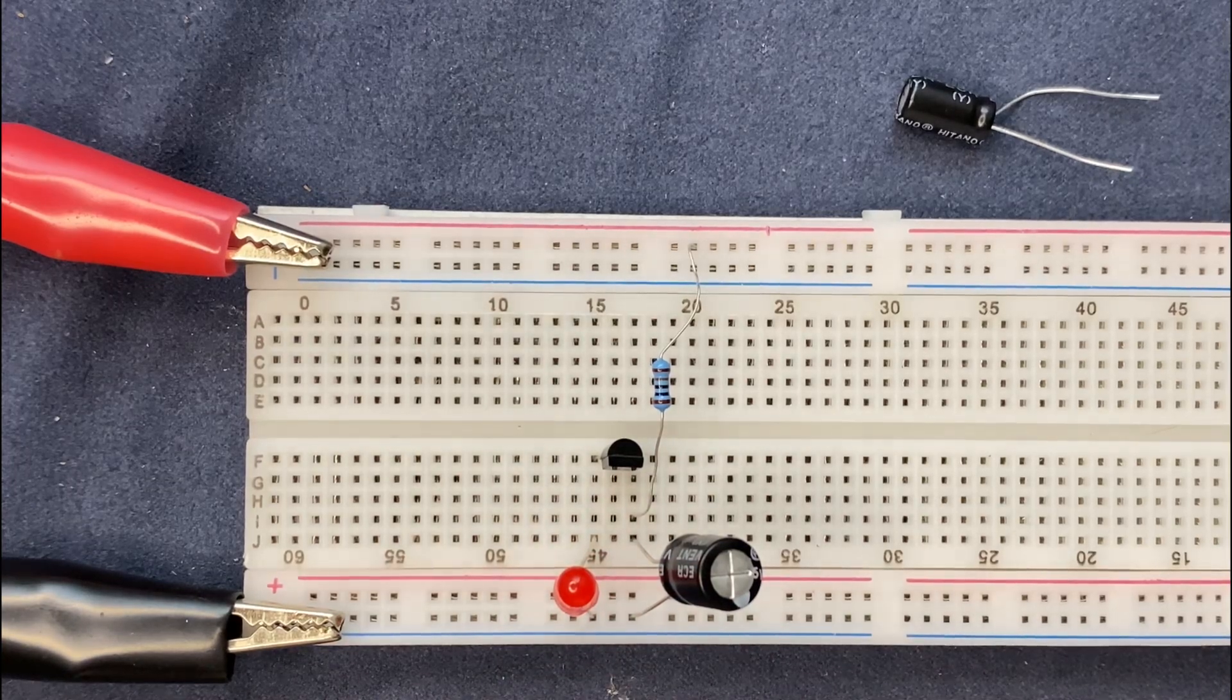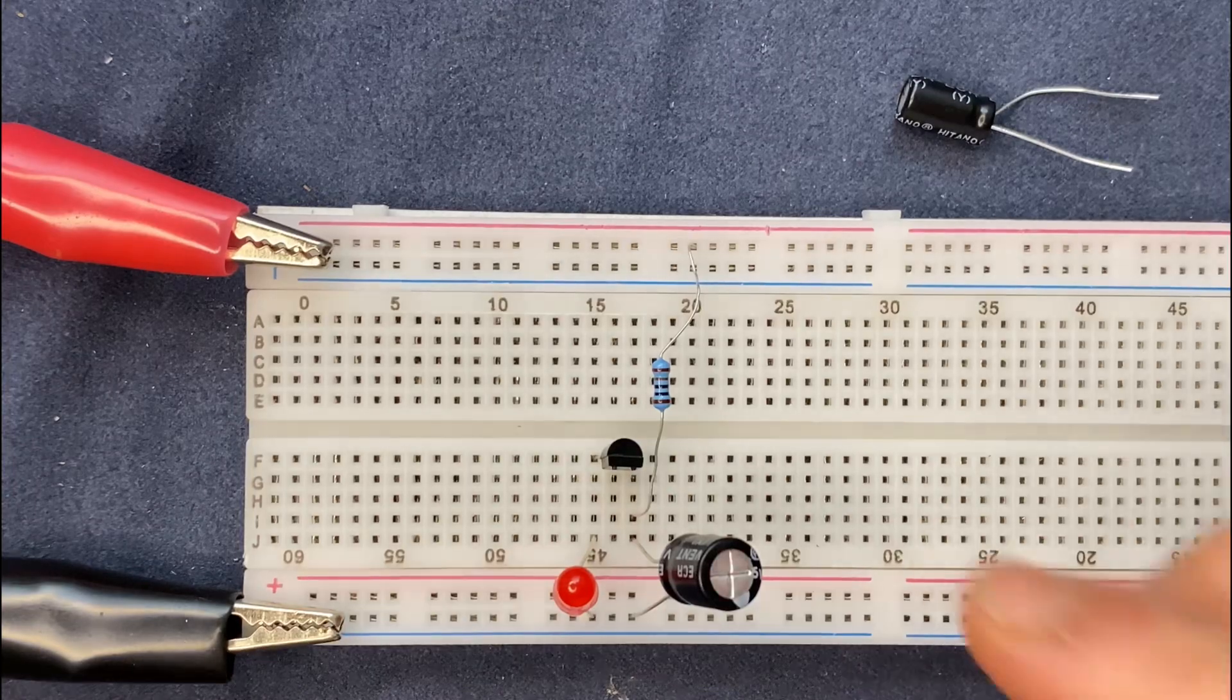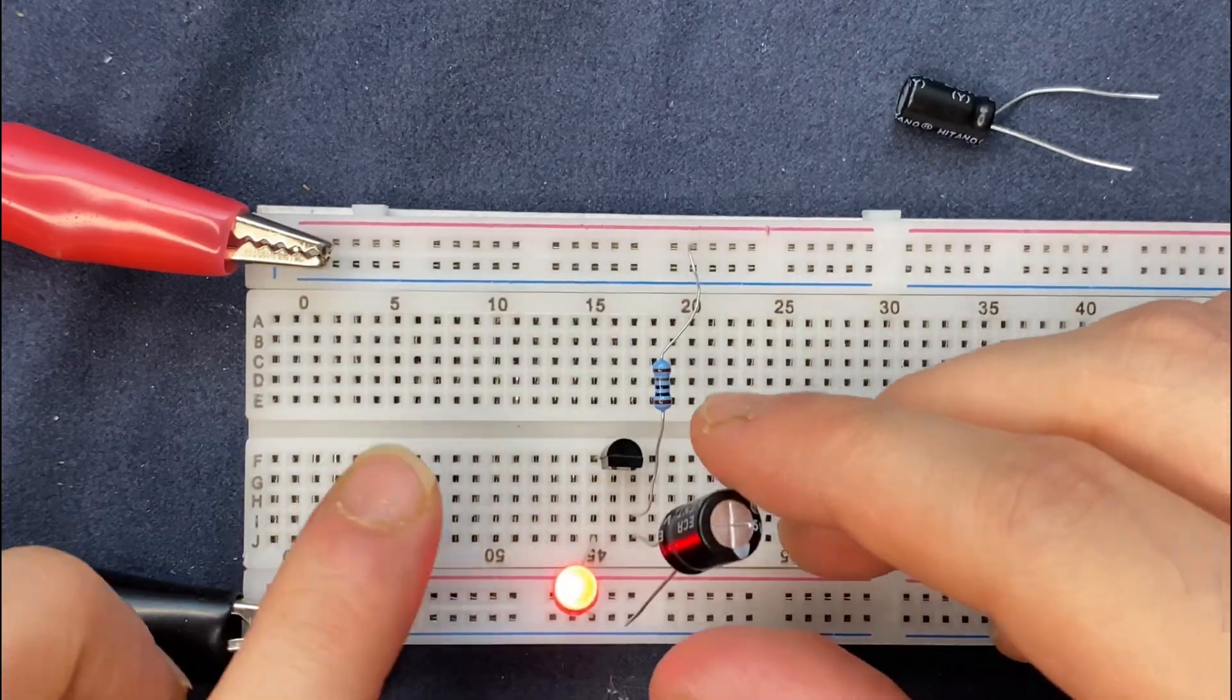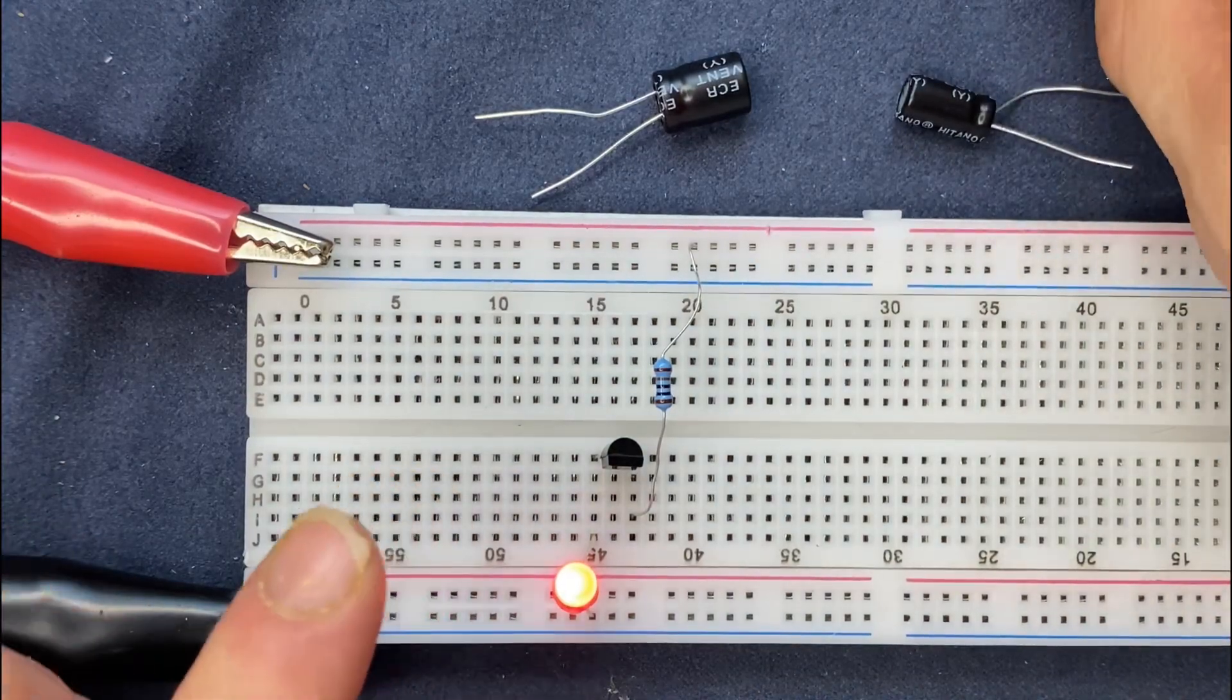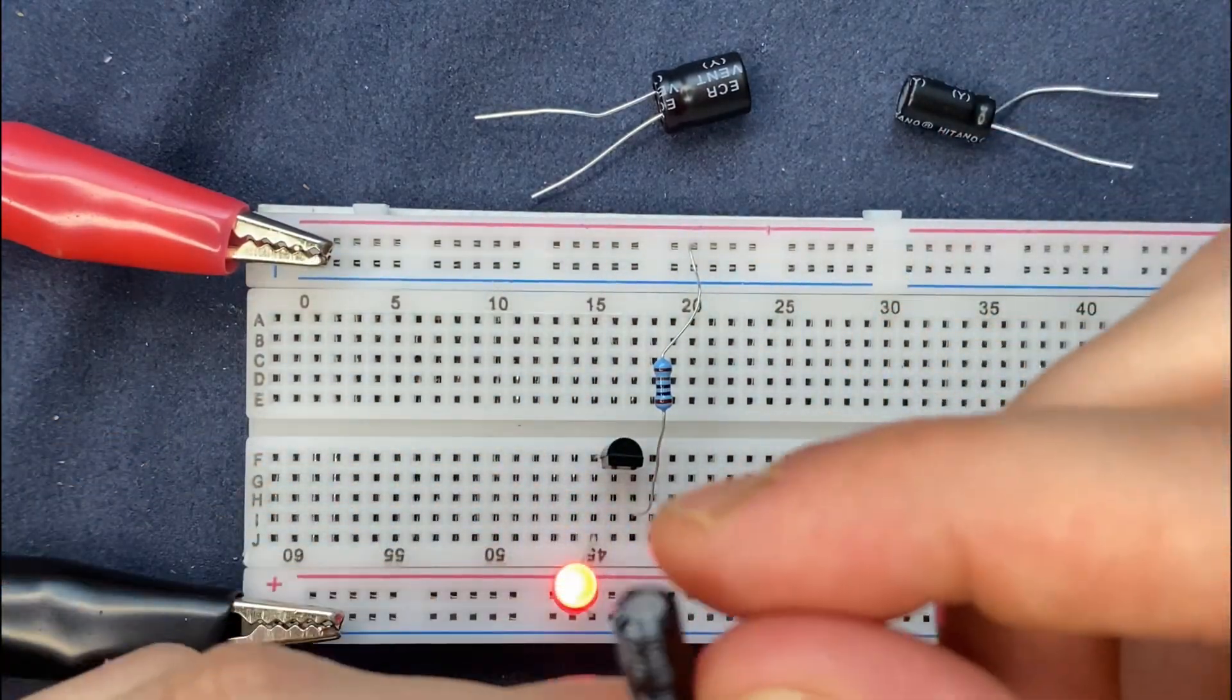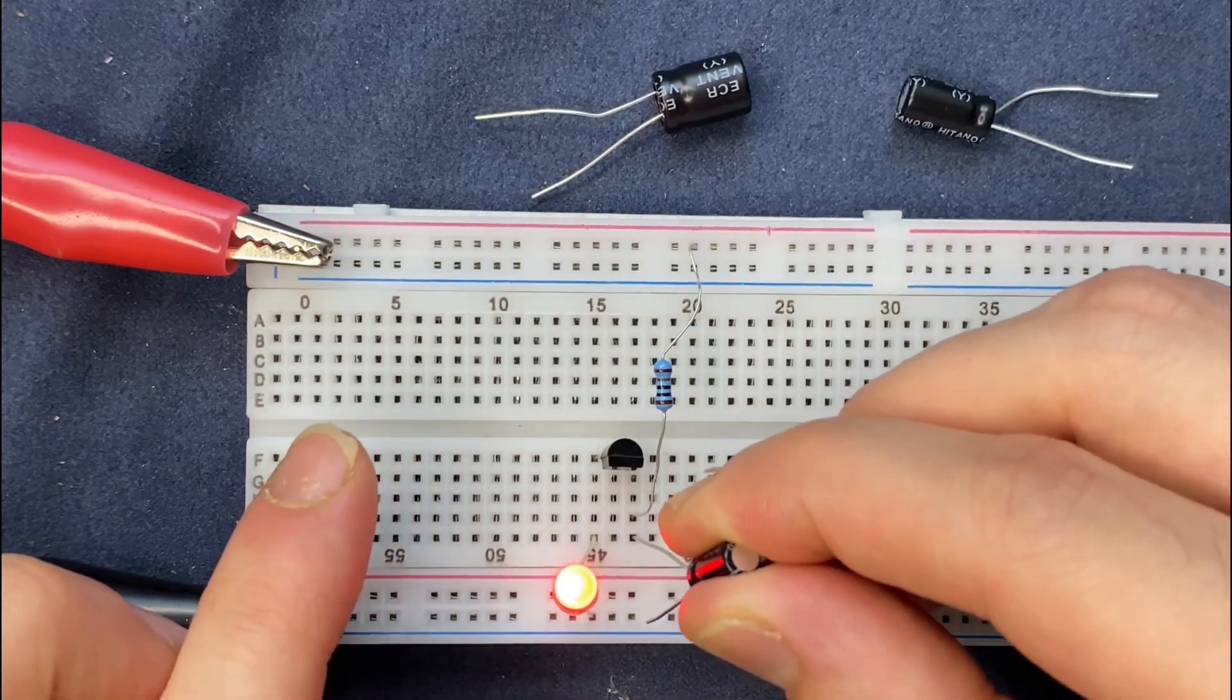So what would happen if I do the opposite? I use a lower capacitance. Let's see. I remove the 220 microfarad and replace it with 47 microfarad which has the least capacitance value in our experiment.